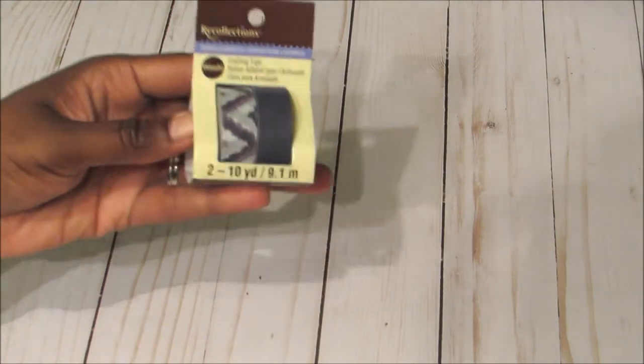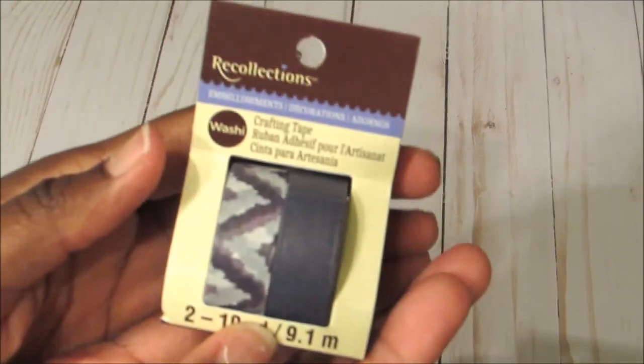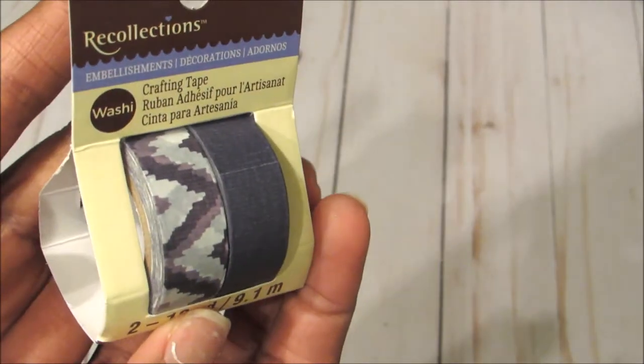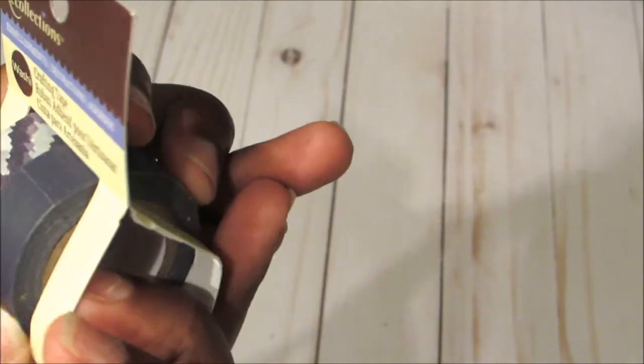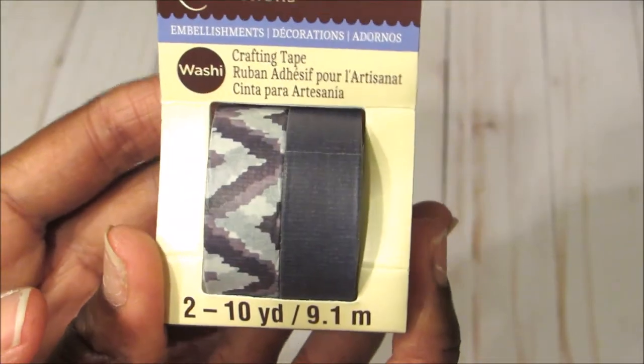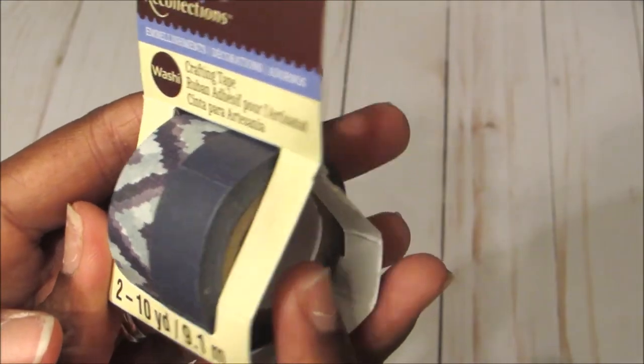Next I grabbed this washi tape. And this washi tape was $4.99. But of course, it was 60% off. So I like this color. It's like gray and navy blue. So I wanted to get that. This navy blue looks kind of linen kind of. But I wanted to grab this up because navy blue is my favorite color.